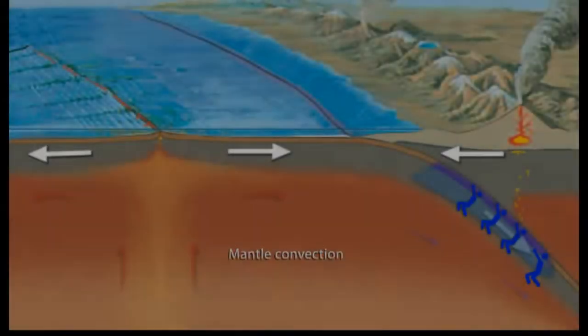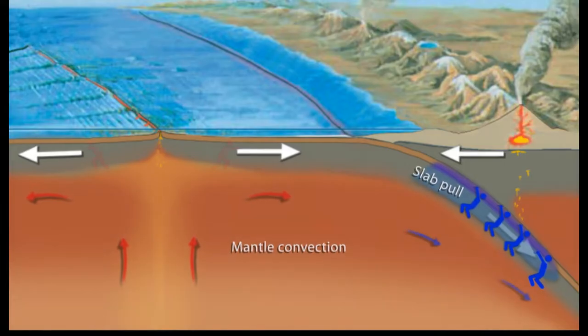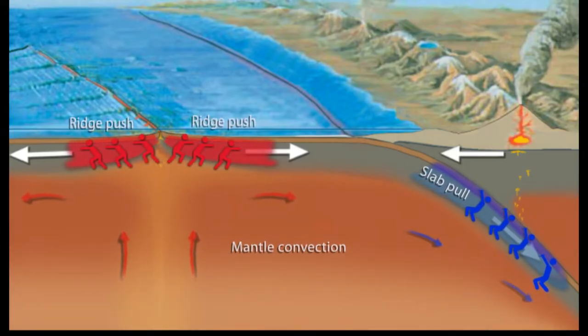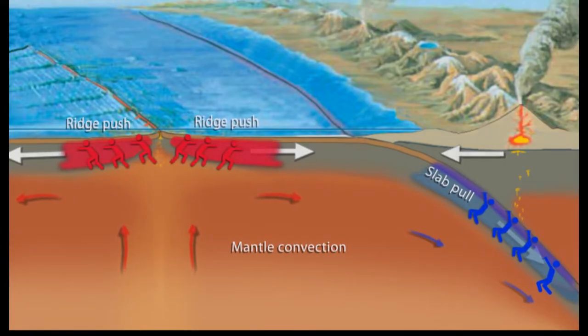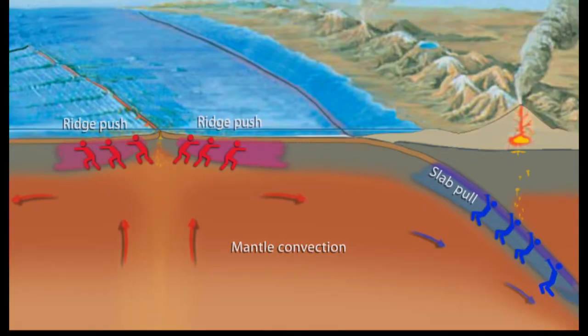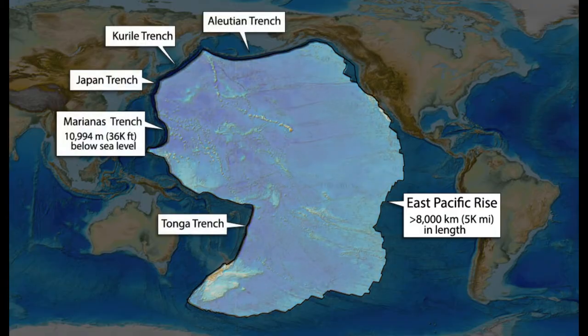Observations of interplate earthquakes and other indications of stress within tectonic plates suggest that the slab pull force is usually larger than the ridge push force.